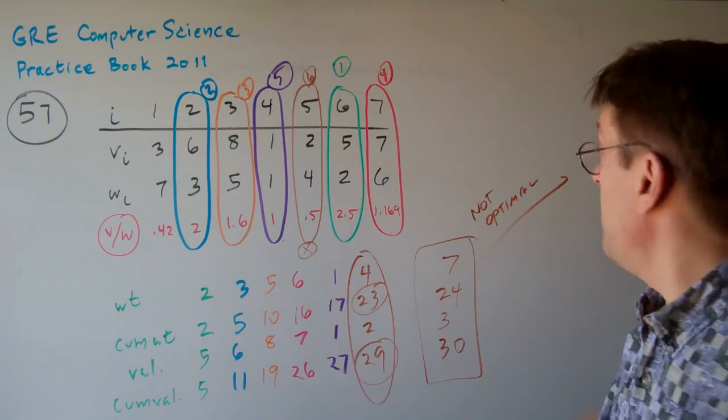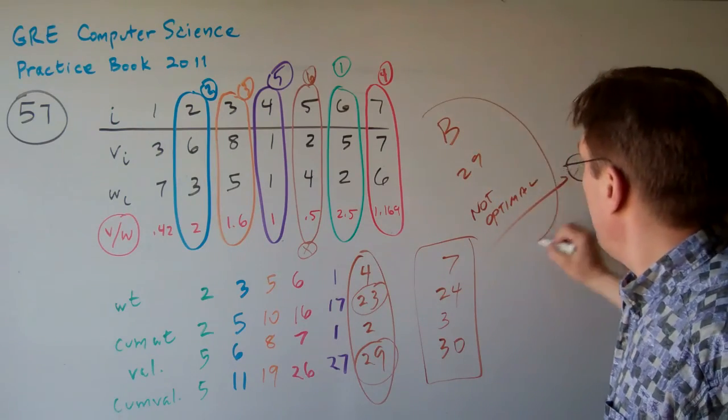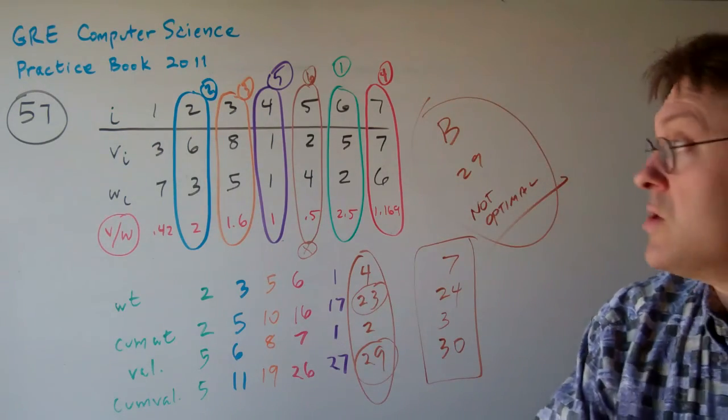And that is B. B, which is 29 and not optimal. That's the answer to question 57.